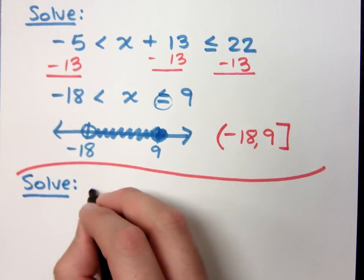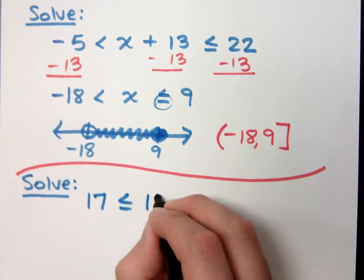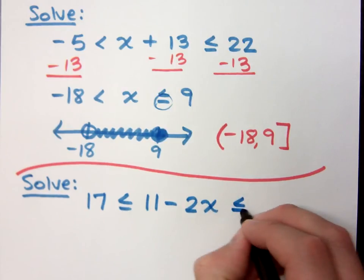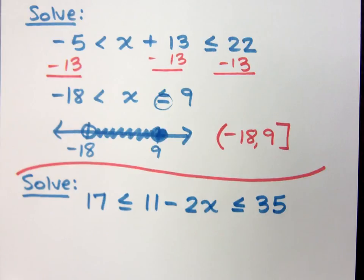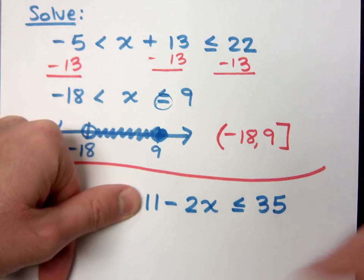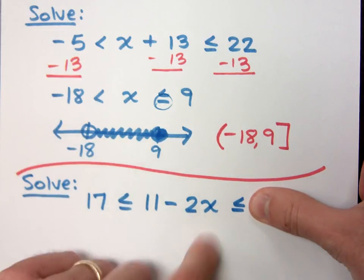If I ask you to solve 17 is less than or equal to 11 minus 2x is less than or equal to 35. Again, you want to get x by itself and it has to stay in the middle. If I ask you to solve this inequality, it shouldn't be that bad. You move the 11, divide by negative 2. Same thing here. Move the 11, divide by negative 2.